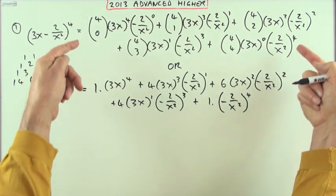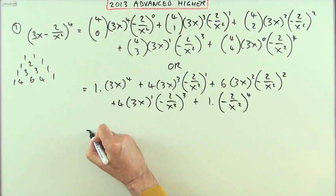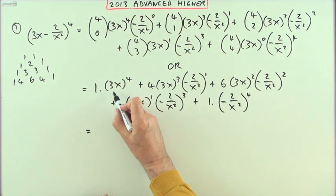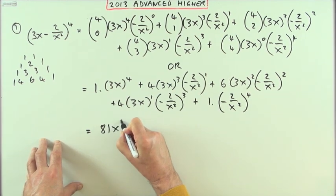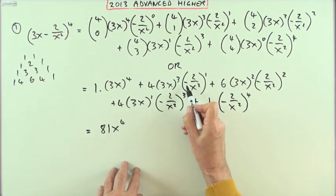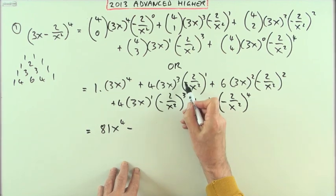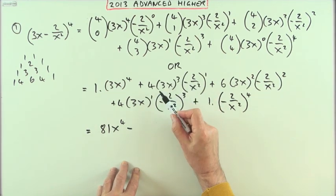So doing that would be quicker than setting this out, and the final line will just be tidying this up. Well, the first one that's just going to be 3 to the power 4: 9 nines are 81, 81x to the power 4. The next one's going to have a negative term in it, and we've got 27, 54 times 4, 216x cubed with x squared underneath leaves a single x.